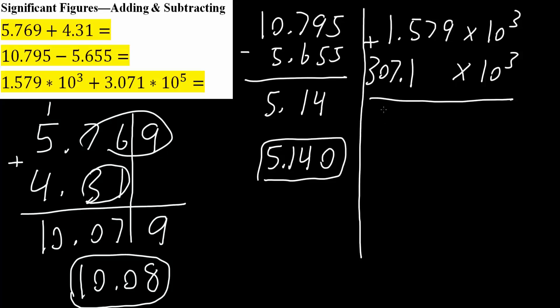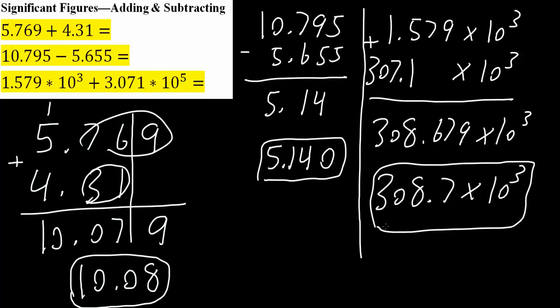So just adding it, we would get 308.679 times 10 raised to 3. But to the correct significant figures, we want only one number at the end of the decimal place. So we would get 308.7 times 10 raised to 3. This right here is the final answer. And that's all we need to do for these three problems.